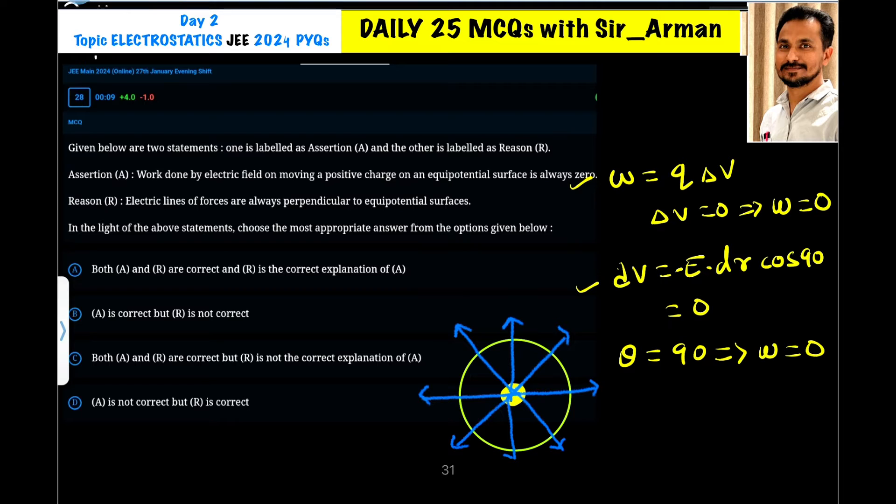Now, what is the equation for the work done? Work done is equals to Q delta V. This is the simplest equation that you are learning from class 10. It is Q delta V.